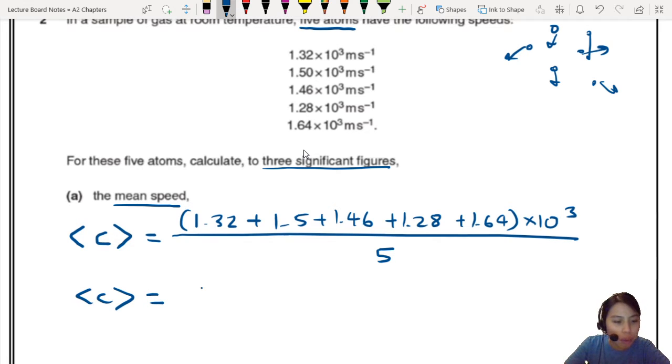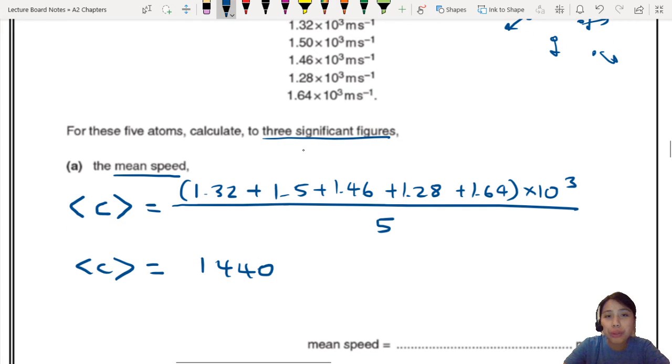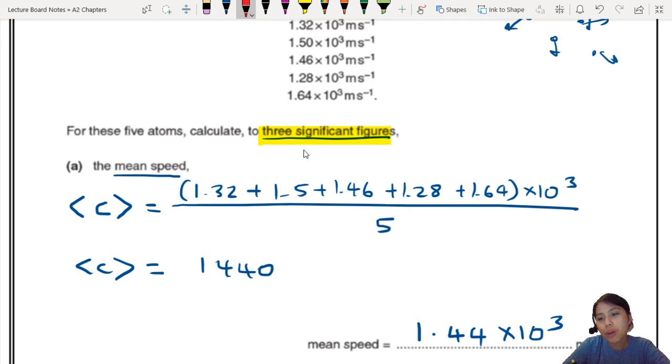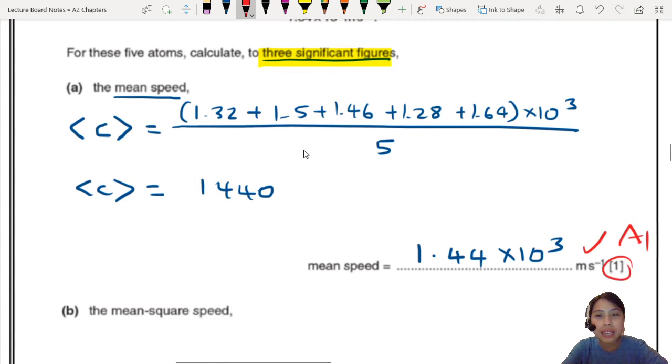So I should get a mean speed of about 1440. Now I need to remember they want me to write 3SF. So in the final answer, I need to make sure that whatever I get reported in standard form or otherwise should be 3SF. So this is the very first mark. Actually, do you need to show working? No, just one mark, final answer is okay.